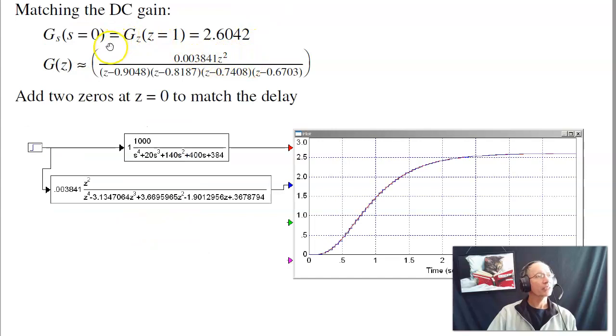To match the dc gain, plug in s equals zero. That should match the dc gain at z equals one. And that gives you 0.003841 to match the dc gain. And the two zeros at z equals zero just matches the delay.